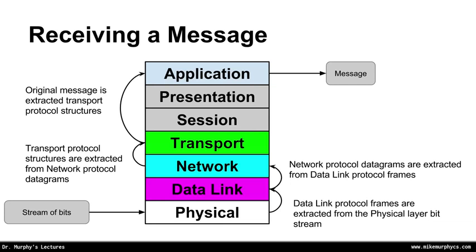At the receiving end, that stream of bits comes into the physical layer of the receiver and gets broken up into data link protocol frames. The network protocol datagrams are then extracted from those data link protocol frames. The transport protocol structures are then in turn extracted from the network protocol datagrams. Finally, the original message can be reconstructed by the application layer from the transport protocol structures.